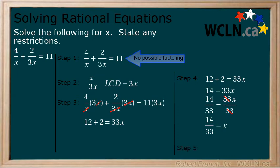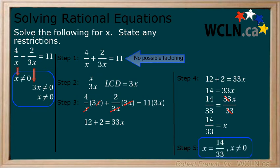Step 5. State any restrictions. If we go back to the original equation, we see that we have a restriction of x cannot equal 0. Therefore, the final answer is x equals 14 over 33, where x cannot equal 0.